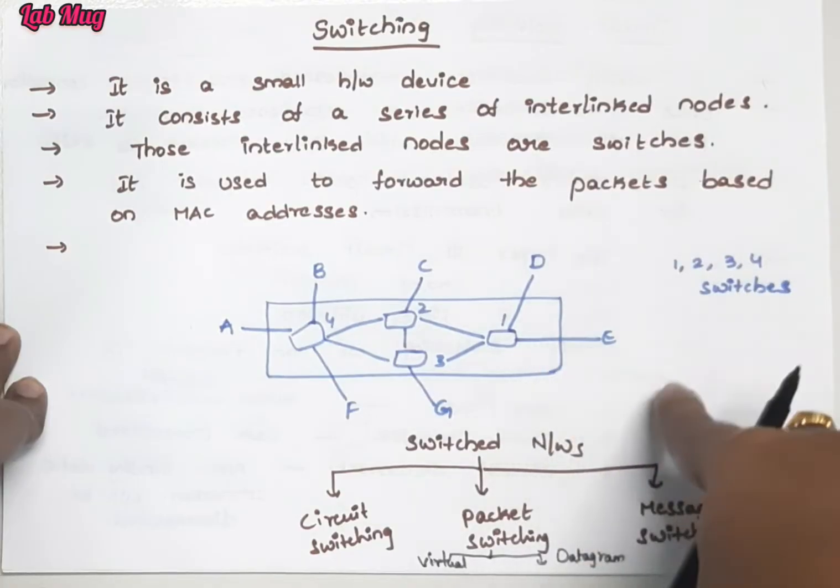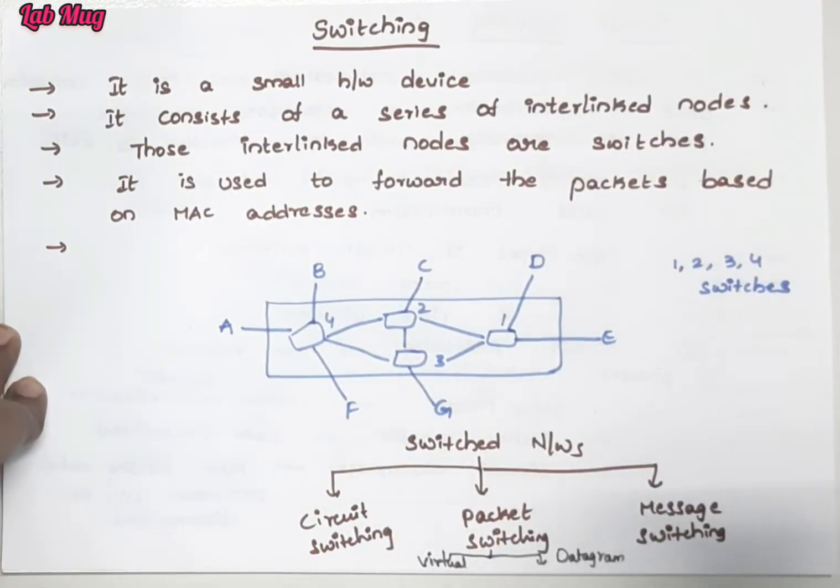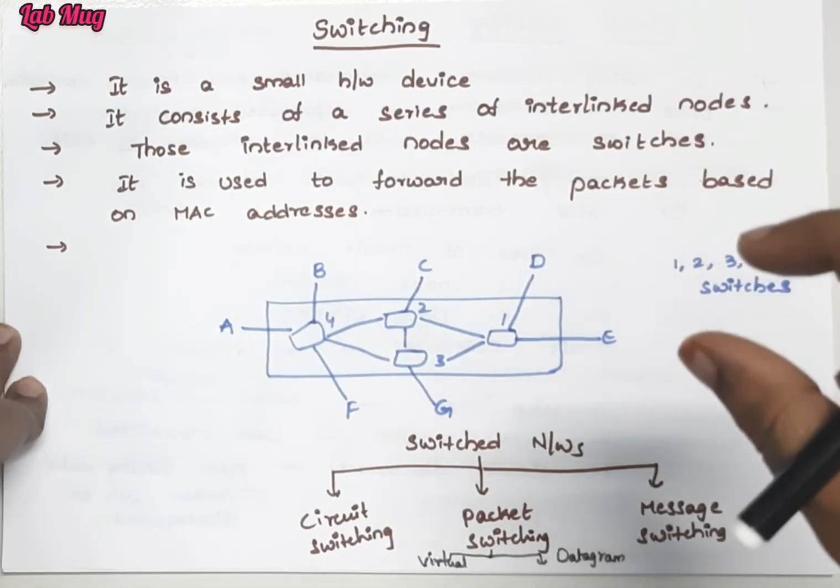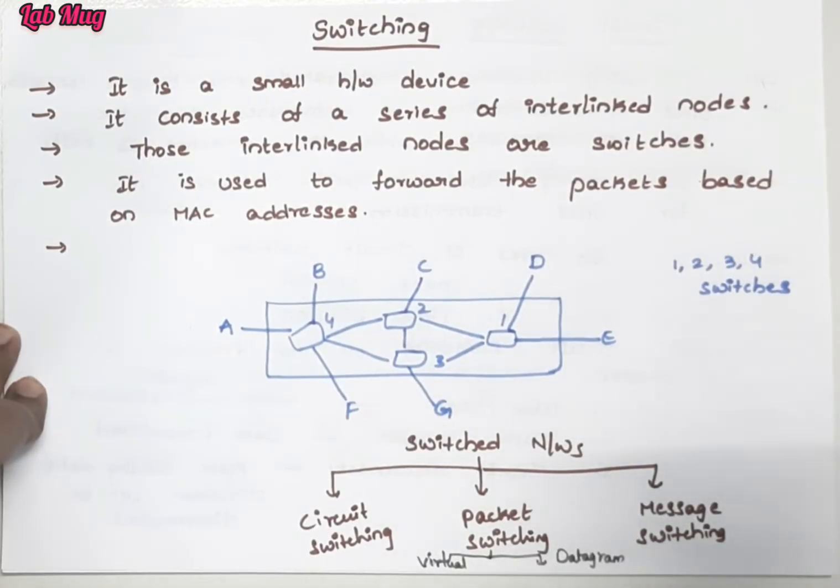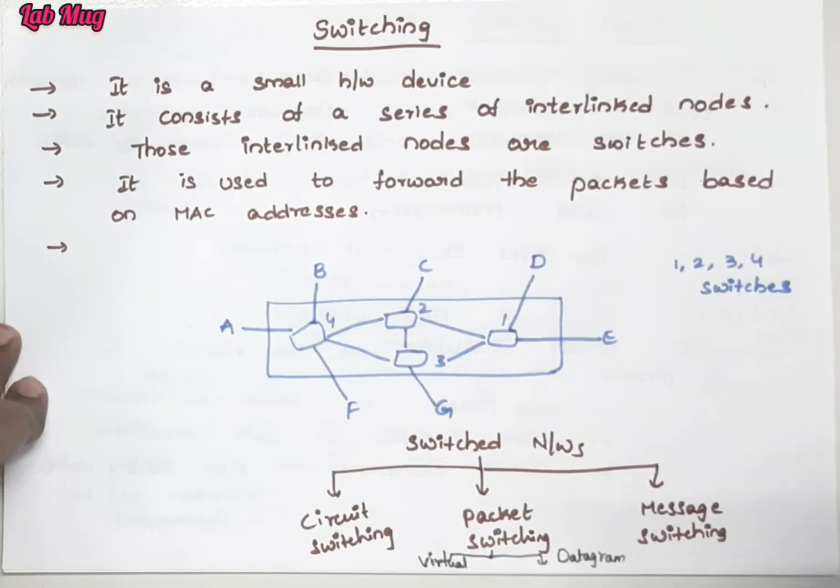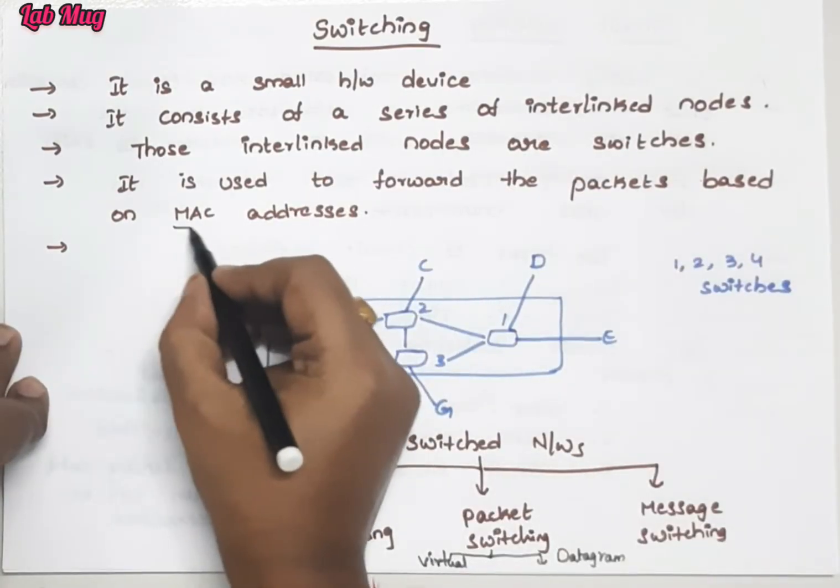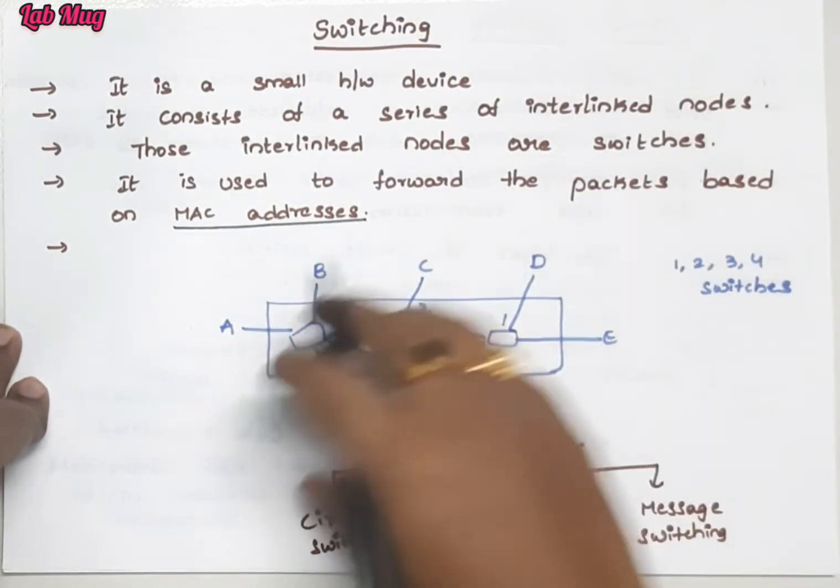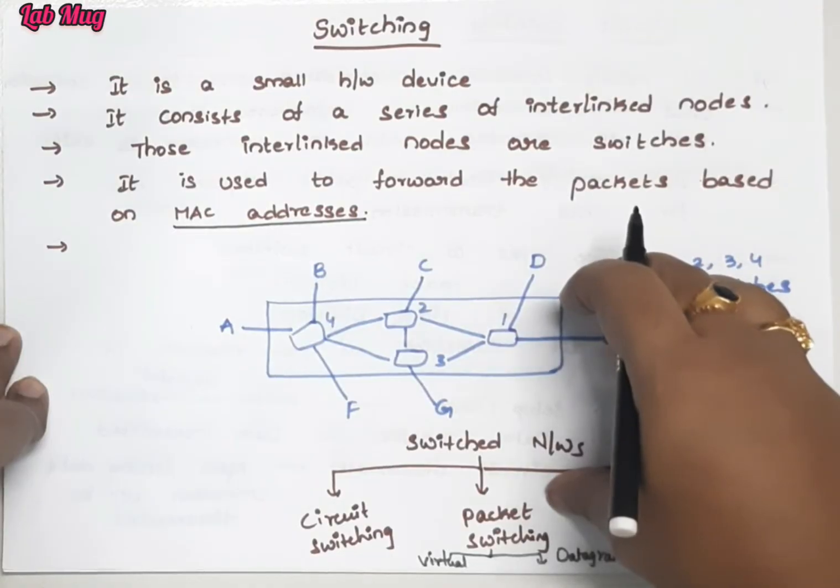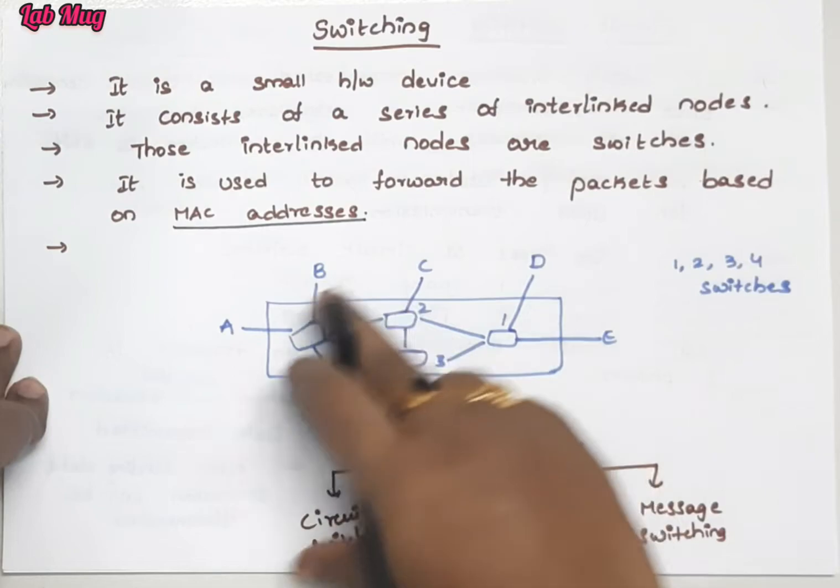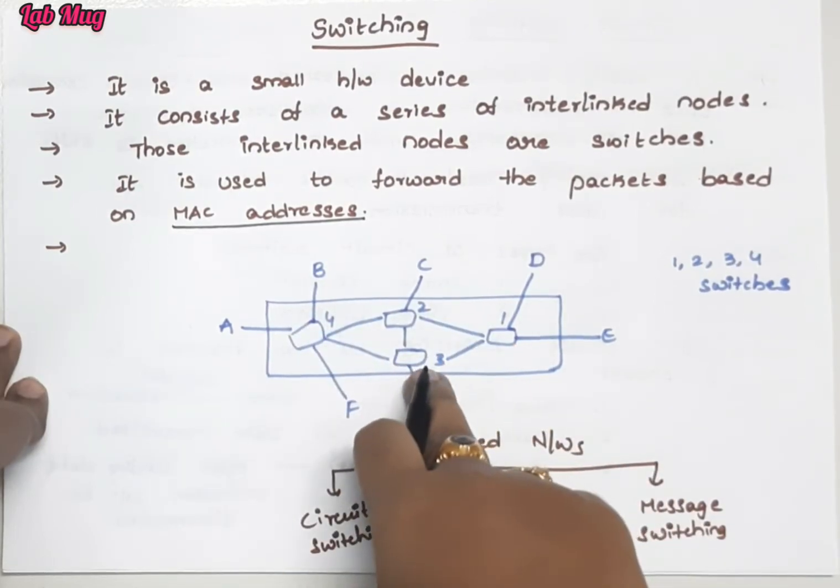Between networks A, B, C, D, E, F, G - between these users - data transfer is based on packets. From one to another we transfer data in the form of packets. This is based on MAC addresses. We perform packet formation, conversion, transmission, and data transmission using switches. This is called switching.